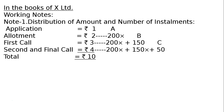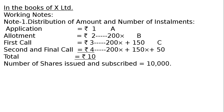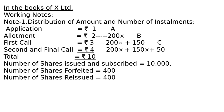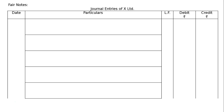For A part: Allotment, First call, Second and final call — 200 cross each. For B: B paid application and allotment Rs 3, hence B could not pay first and second call — plus 100 cross each. C failed to pay second and final call on 50 shares — plus 50 cross. Number of shares issued and subscribed: 10,000. Number of shares forfeited: 400. Number of shares reissued: 400.